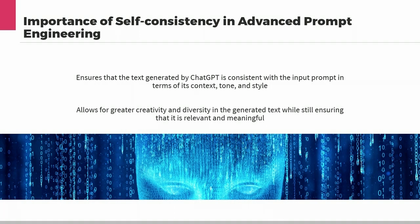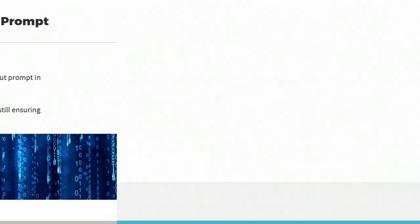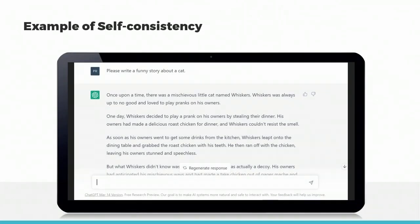Here we illustrate the concept of self-consistency through a simple example. We consider a prompt that asks for a funny story about a cat. If we feed this prompt into ChatGPT, we expect it to generate a story that is both about a cat and funny. If the generated story is about a dog instead of a cat, or if it's not funny, then it would not be self-consistent.